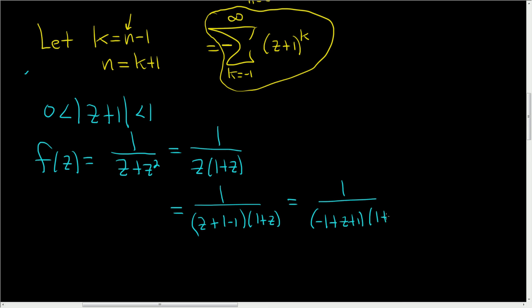1 plus z going kind of fast here. And we don't want negative 1 plus z plus 1. We want 1 minus z plus 1. So you can factor out a negative. And so you get 1 minus z plus 1, 1 plus z. And then you can bring the negative upstairs.